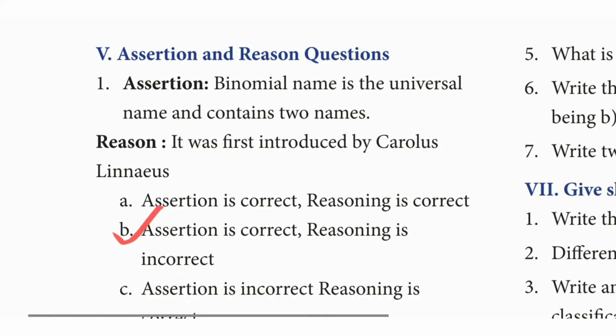Assertion and Reason, first question. Assertion: binomial name is the universal name and contains two names. Reason: it was first introduced by Carolus Linnaeus. The answer is option B — assertion is correct, reasoning is incorrect.